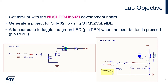We will generate a project for the STM32H5 using STM32CubeIDE, then add some user code to toggle the green LED connected to PB0 on your STM32H5, as shown in the schematic. The LED will toggle when the user button is pressed. The user button is connected to PC14 on your STM32H5.